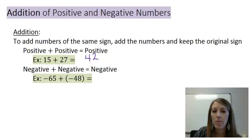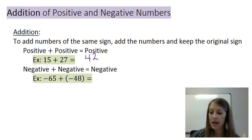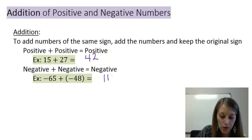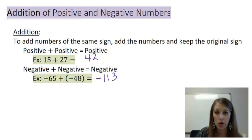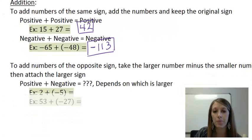They're both positive, so my final answer is positive — we don't denote positive in any special way. Next example: negative 65 plus negative 48. They're both negative, so we just combine them. 65 plus 48 gives me 113, but both numbers are negative, so my final answer is negative 113. So if they're both positive it ends up positive; if they're both negative it ends up negative when we are adding them.